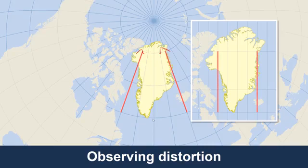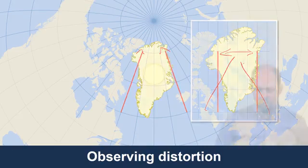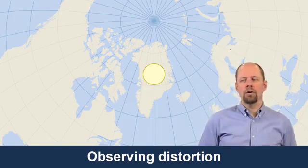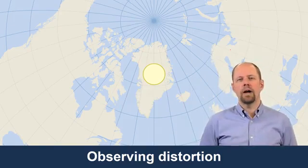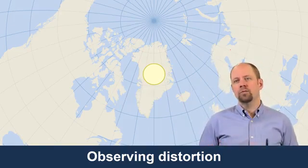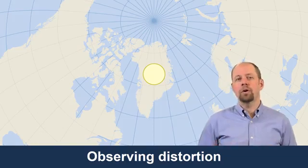So this is getting stretched out. Instead of the meridians converging like they do on the globe, they become parallel, and so you're stretching Greenland horizontally. Instead of focusing on Greenland or some other landmass all the time, why not use a circle as a way to visualize what's happening to our distortion?